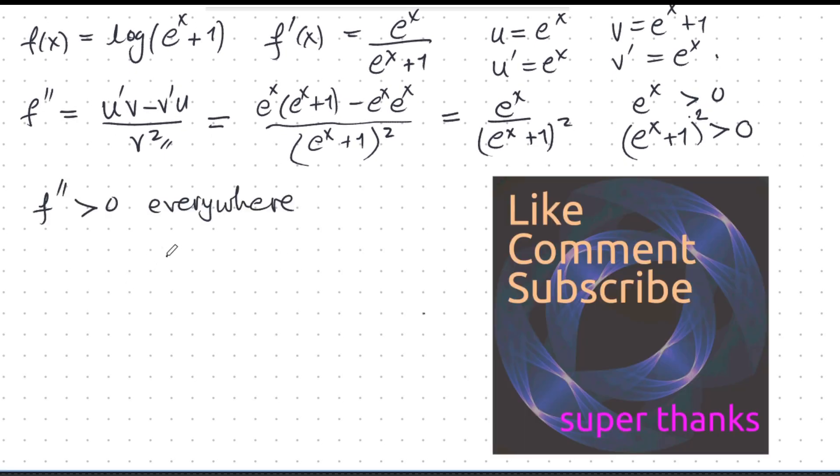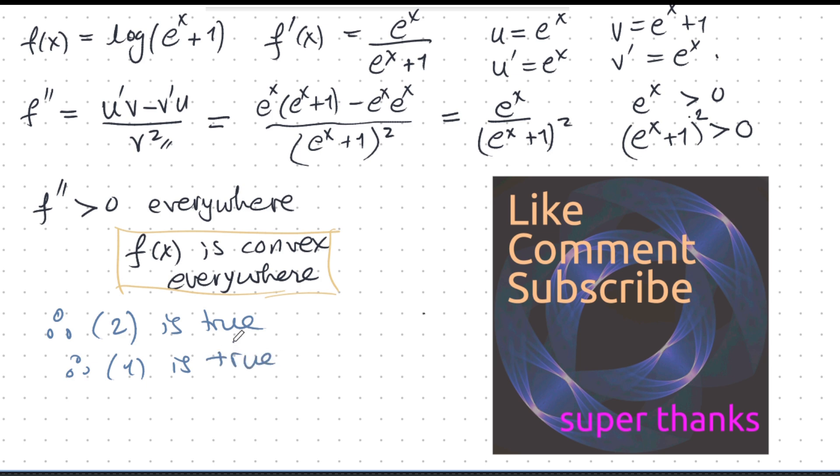Second derivative is positive everywhere. So, f(x) is convex everywhere. And so, therefore, inequality 2 is true, and therefore, inequality 1 is true. An amazing sequence of events, of reasoning, totally awesome. I think this is the best Jensen inequality illustration I've found so far, and I'm sure I'm going to find some other really good ones, and I will put them into the playlist.